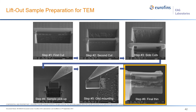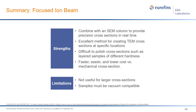In summary, focused ion beam combines all the benefits of an SEM column and allows precision cross-sections in real time. It's an excellent method for creating TEM cross-sections at very precise locations and for producing polished cross-sections on difficult samples — ones with different hardnesses that smear or are otherwise unable to be processed mechanically. It's faster, easier, and cheaper than mechanical cross-section.